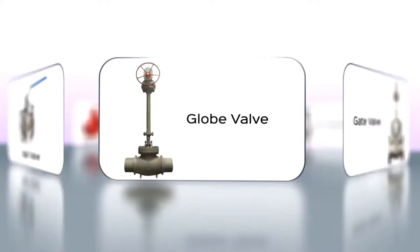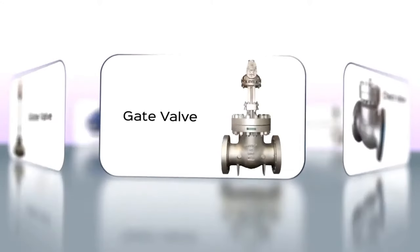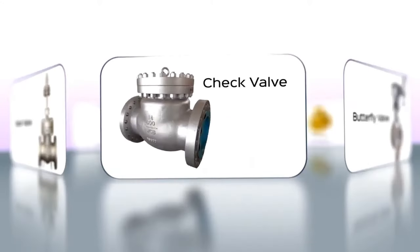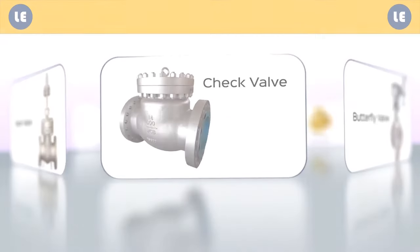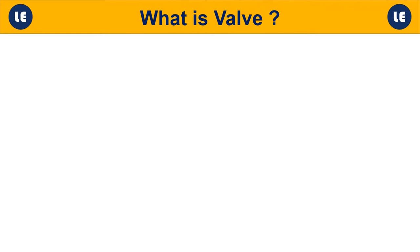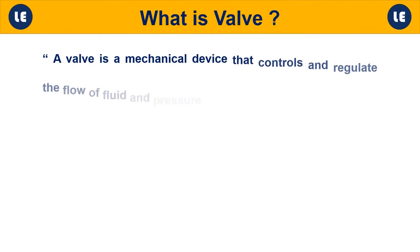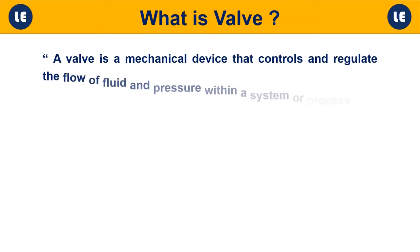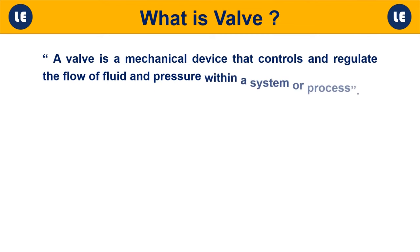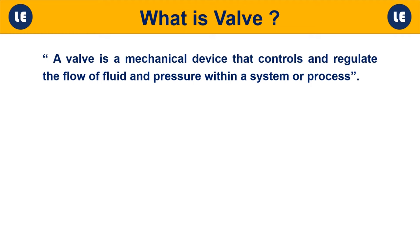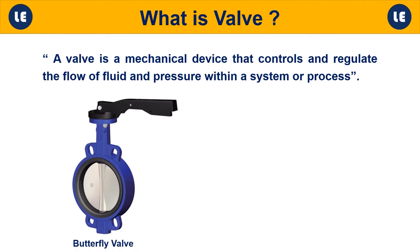Selecting the right valve can determine the success or failure of the system or process. A valve is a mechanical device that controls and regulates the flow of fluid and pressure within a system or process — like the examples given below: butterfly valve and ball valve.